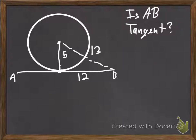So, here's the question. Is AB tangent to the circle? So, we have our radius. Our radius is 5. We have AB, and we see that from this point here, the point of tangency to B is 12. And you can't really tell, it's 3. This is a 3.